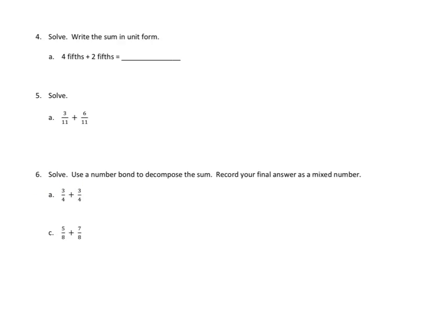We are going to solve, use a number bond to decompose the sum. Record your final answer as a mixed number. I'm going to tackle six C. So let's see, we have, we're working in the same unit again. We have eighths and eighths. How many of them do we have in the first part? We have five, and then we have seven in the second one. So what is five of something plus seven of something? I think that would be equal to 12 of that thing. And what is that thing in this case? That's eighths. So we have 12 eighths.